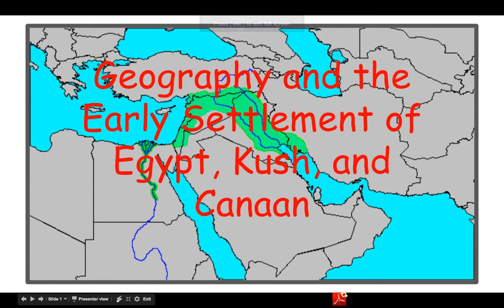I'm going to give you the short, short version of this just as a reminder. So here you go: geography and the early settlement of Egypt and Kush is what we're going to start with right now.